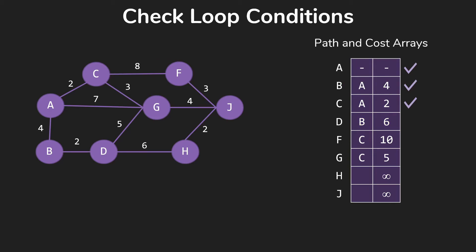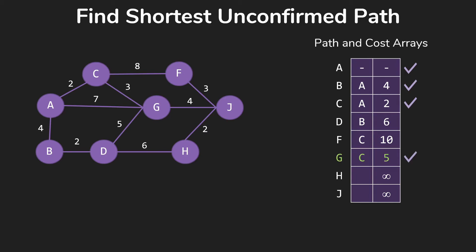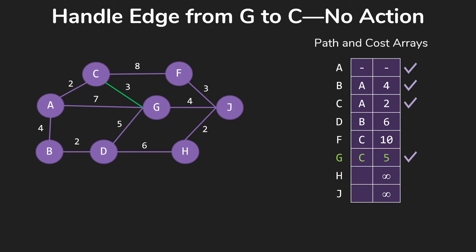We're going to check our loop conditions. We're not done yet. So our next smallest path, our next shortest path, smallest cost, is to G through C for 5. So now we update using those edges. So nothing to do from G to C or G to A.